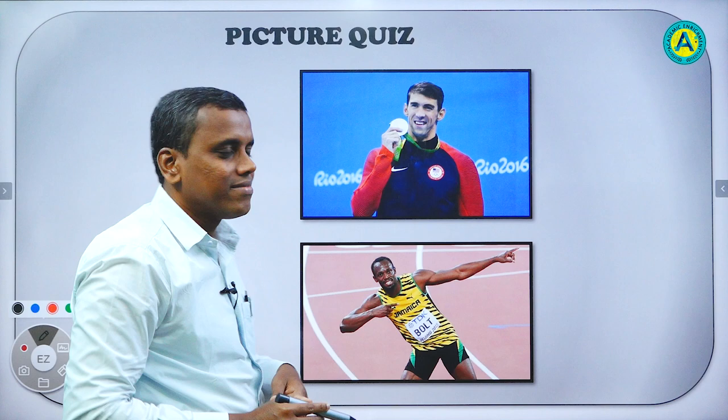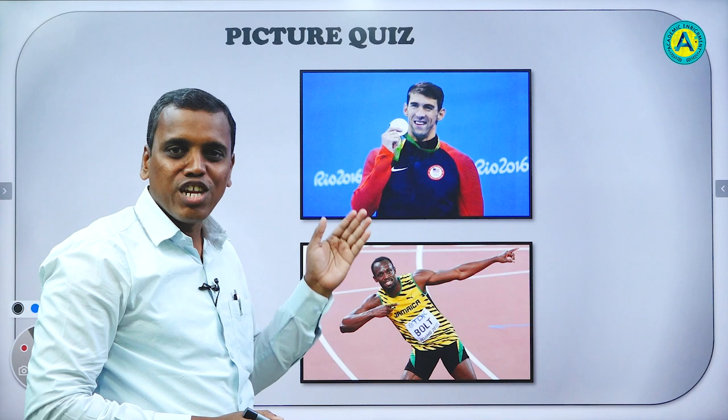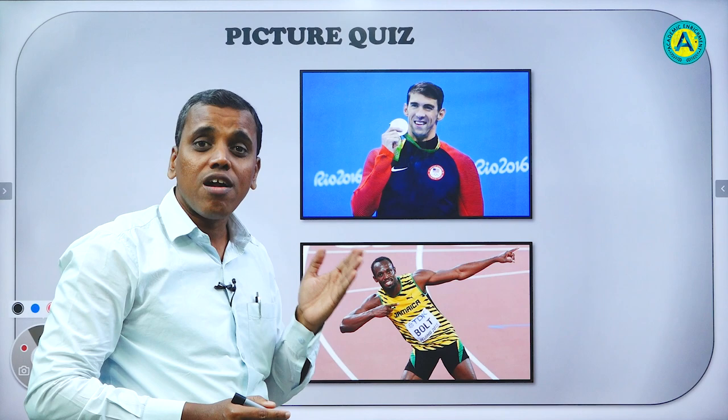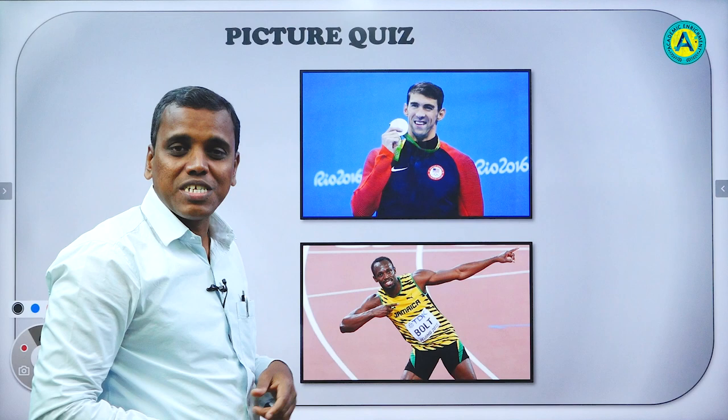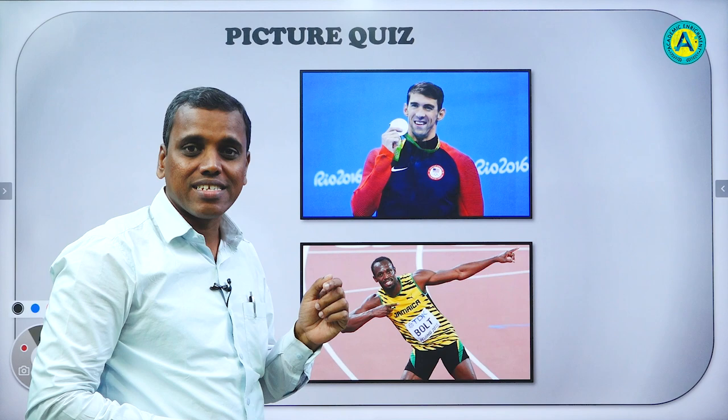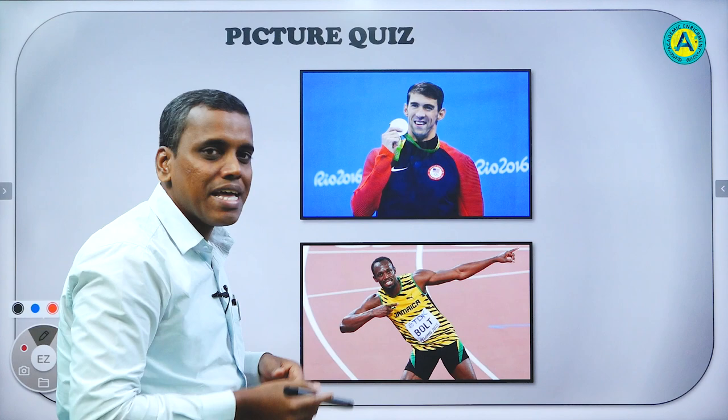Students, the last one. We have two more pictures. Can you recognize them? Both of them are very famous, world famous athletes from the Olympic games. Look at the first picture. I will give you a hint. He has the most number of gold medals in the whole world. His name is Michael Phelps.